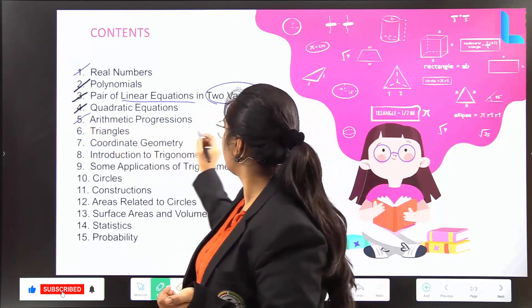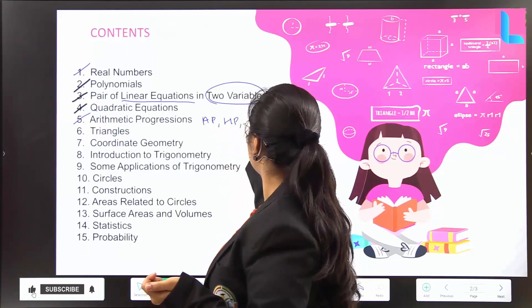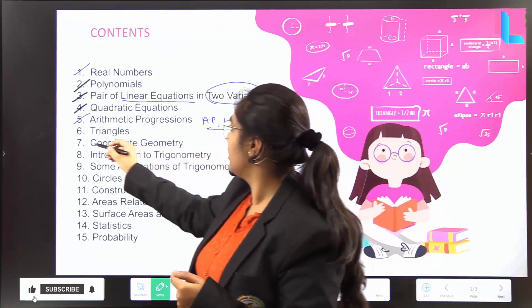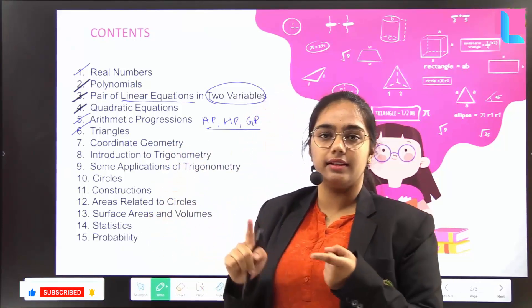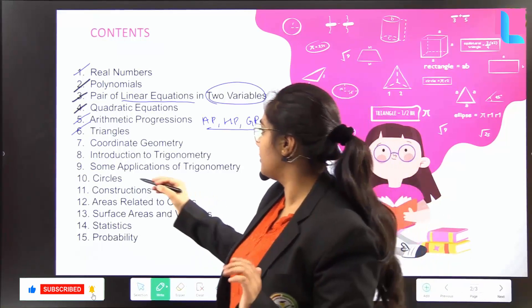And then arithmetic progression: AP, HP, GP. These are the three main basic things which we are going to study here. Triangles is all the theory, then examples, and then all the exercise problems.